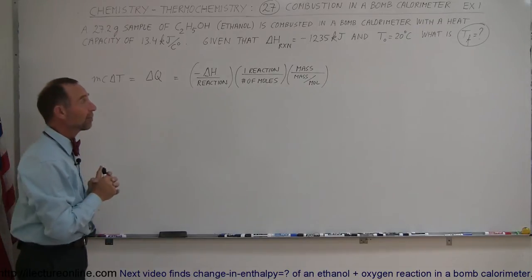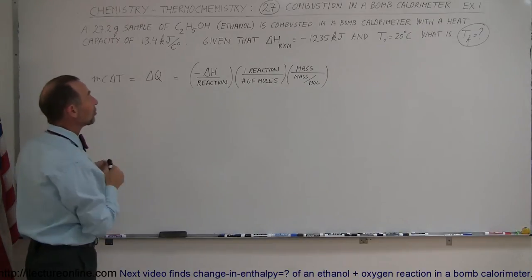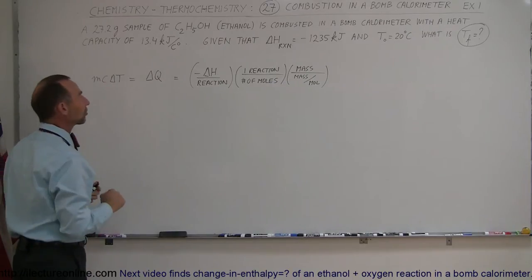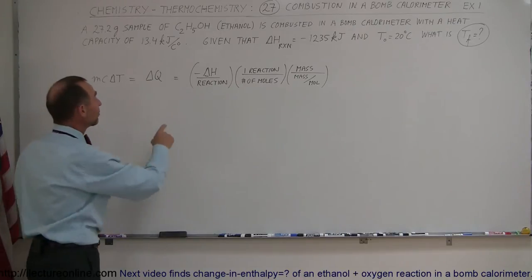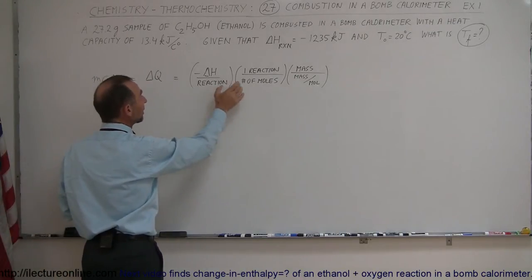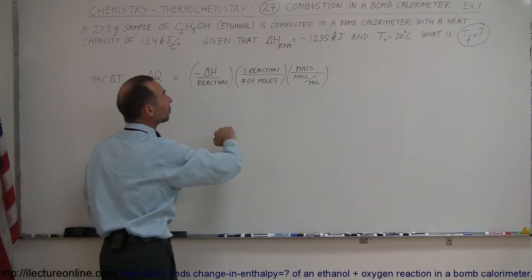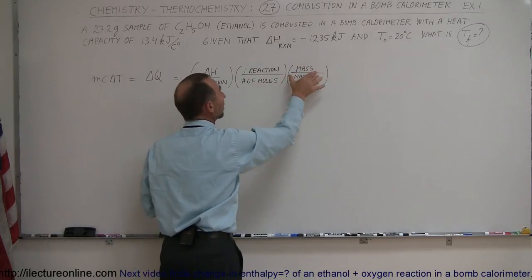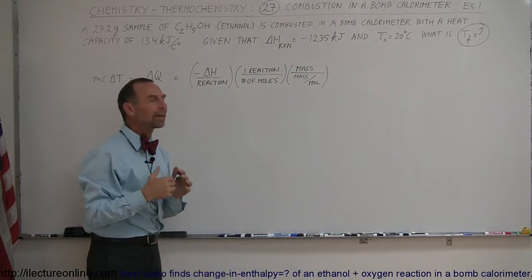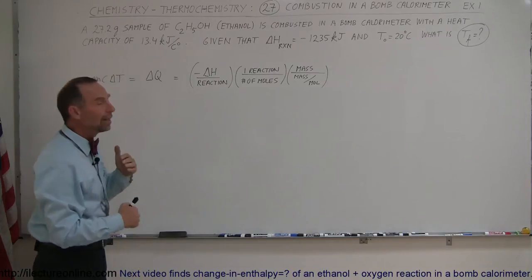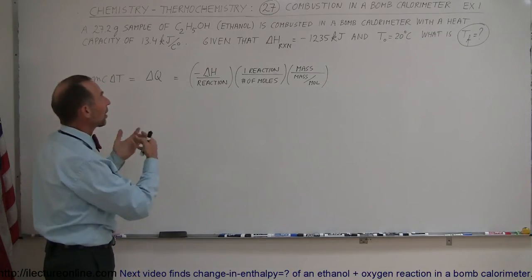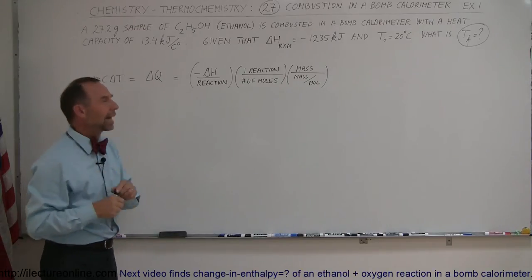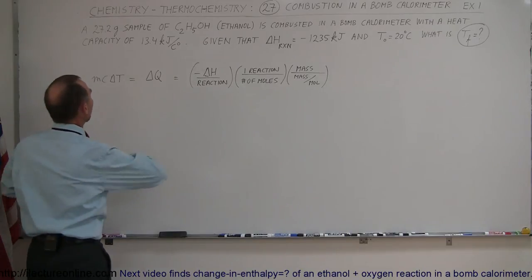Here we have the equation. The heat gained by the calorimeter equals the heat given off by the reaction. As before, the heat given off by the reaction equals the enthalpy of the reaction times the reaction divided by the number of moles in the reaction, and times the mass divided by the mass per mole. That way we account for the amount in the sample and the number of moles in each reaction of the reactant.